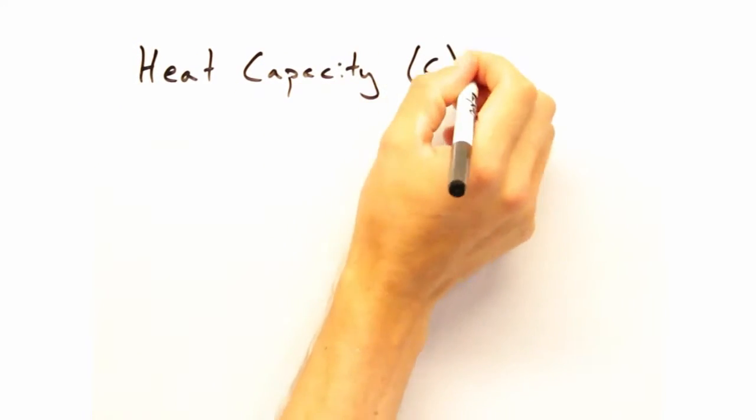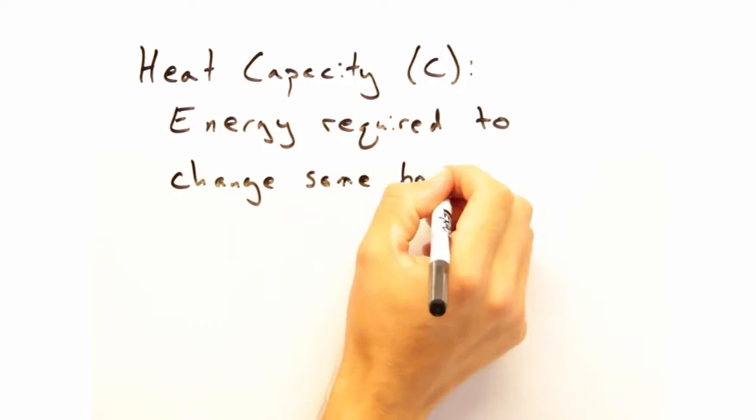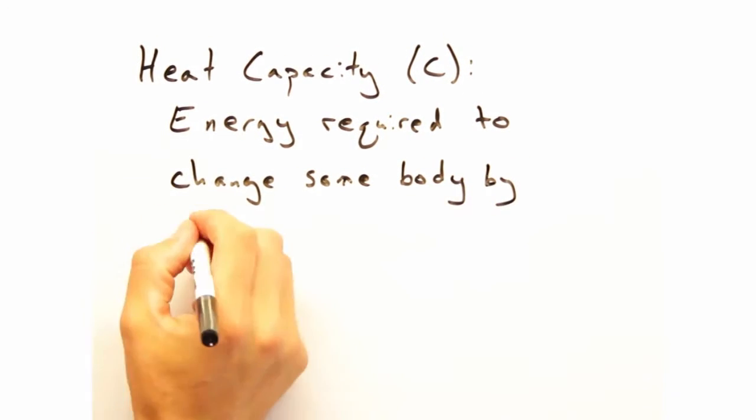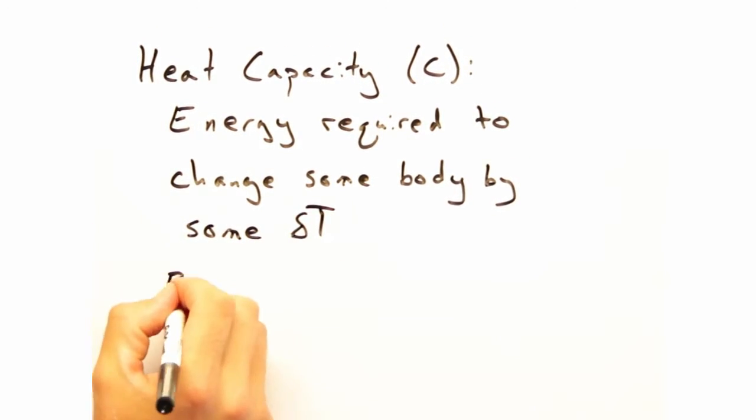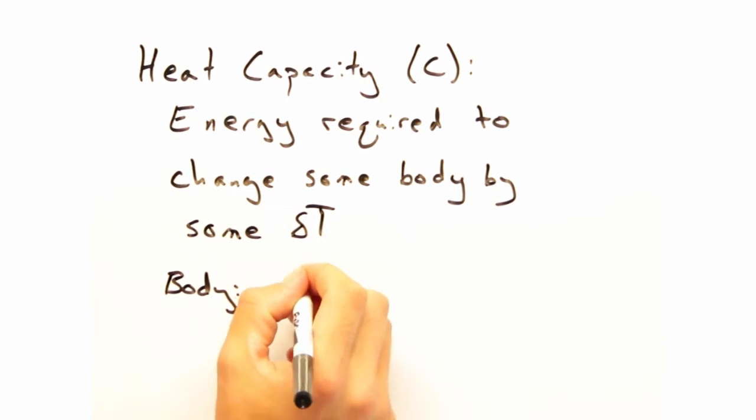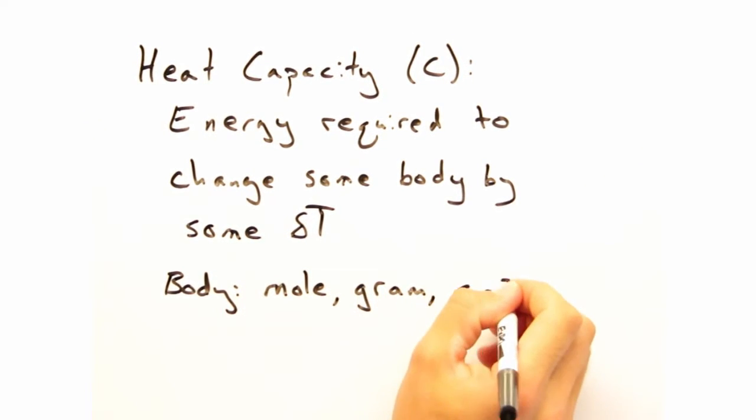As a reminder for those who haven't had gen chem in a while, heat capacity is defined as the energy required to change some body by some delta T. And what we define as a body may seem ambiguous, but it could be anything from a mole to a gram to a centimeter cubed of a material.